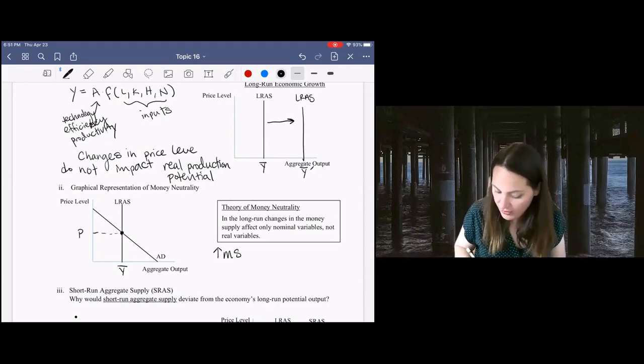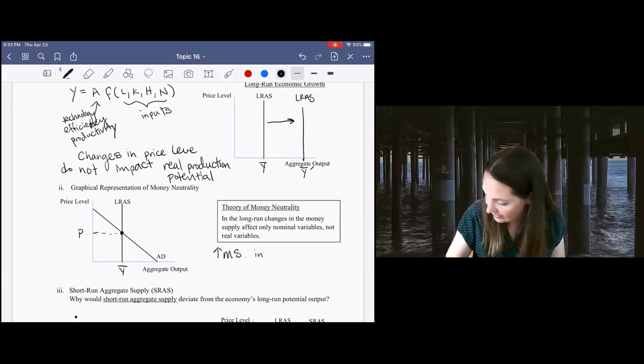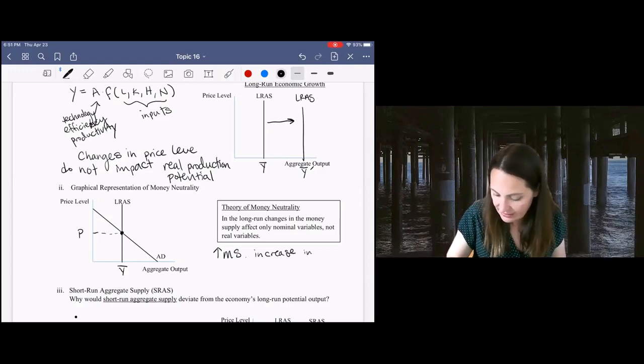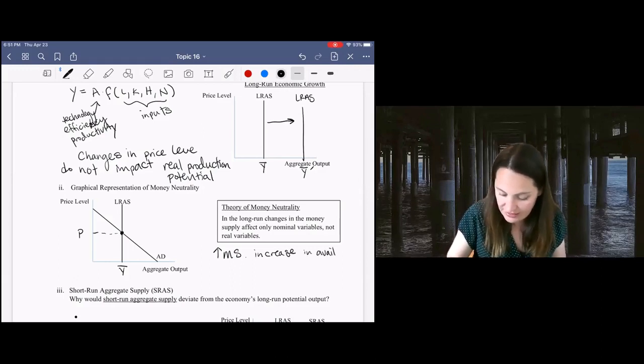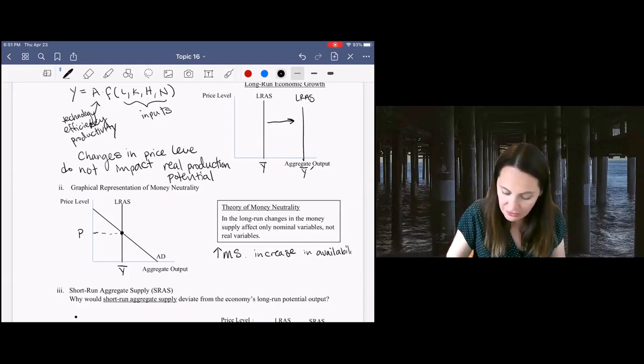When we have an increase in money supply, it means we're going to have more money circulating in the economy. So we have an increase in the availability of funds that banks have to loan out.